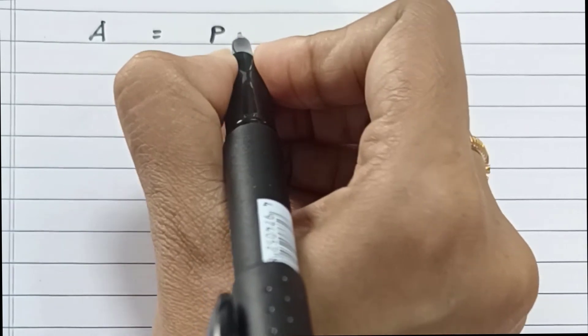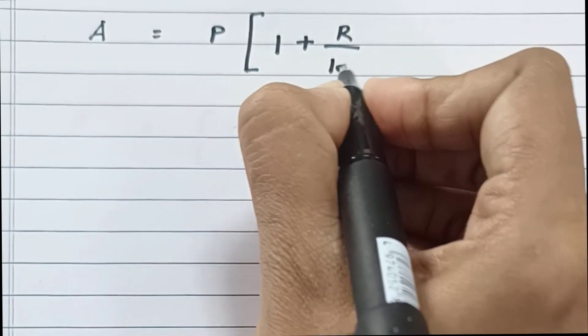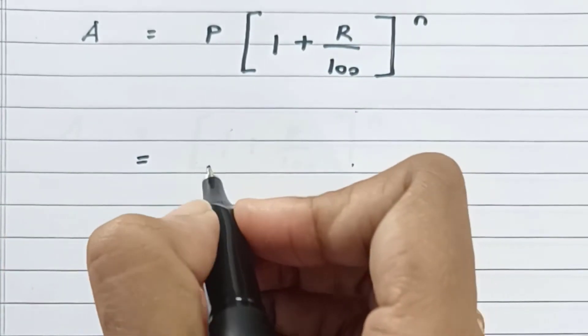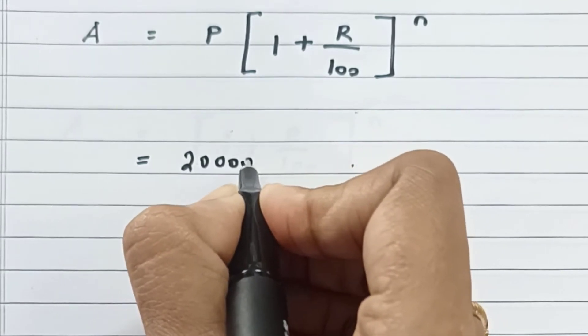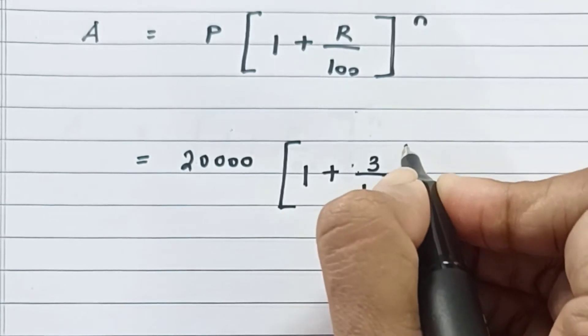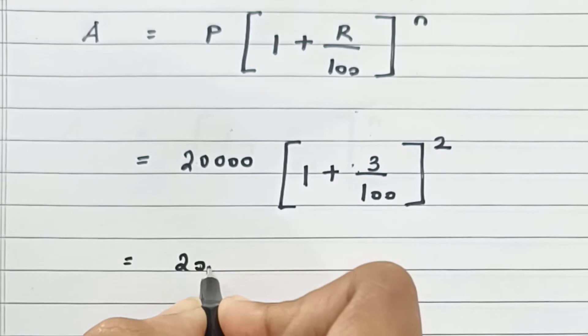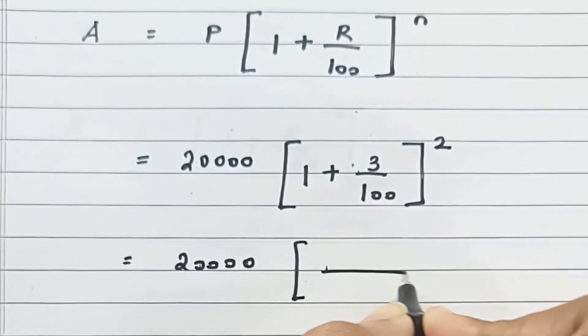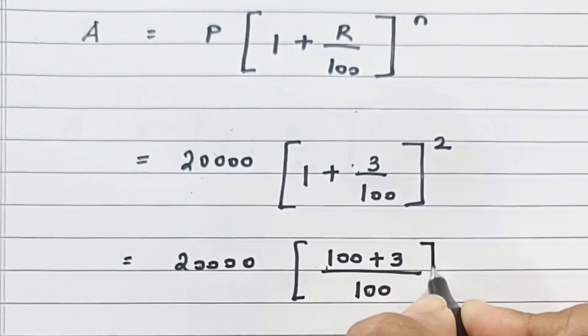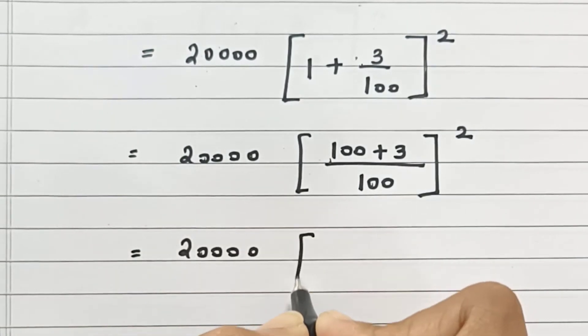Upon substituting the corresponding values, we get principal is 20,000 into 1 plus 3 by 100 whole power 2. So 20,000 into LCM of 100 is 100, so we have 100 plus 3 by 100 the whole square. So we have 20,000 into 103 by 100 the whole square.